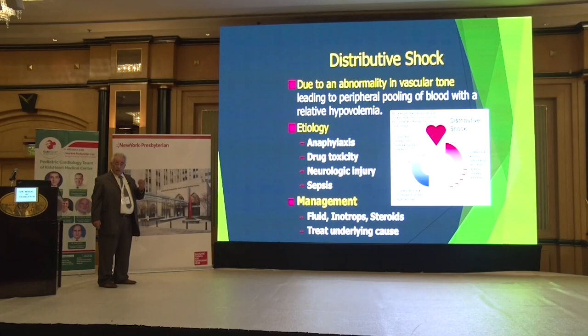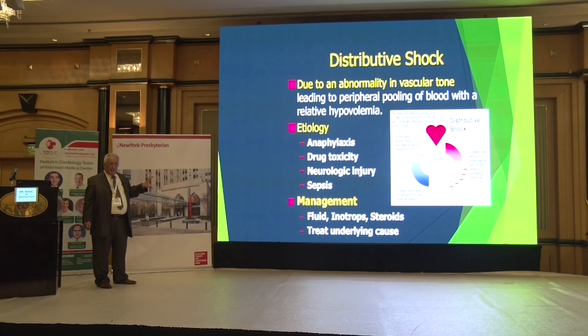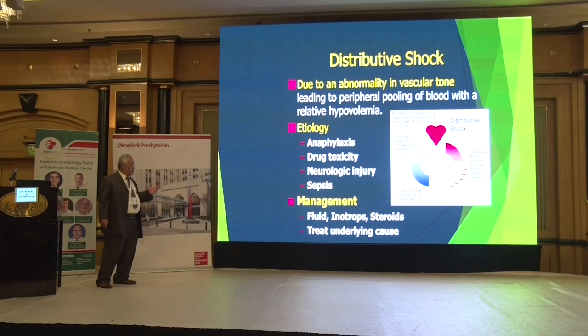In distributive shock, fluids went out of the vessels into the third space — not out of the body. There is peripheral pooling of fluids and blood, with relative hypovolemia. Etiologies include anaphylaxis, drugs, neurogenic causes, and sepsis. Management: give fluids, give inotropes, give steroids, and treat the underlying cause.